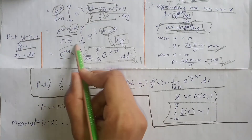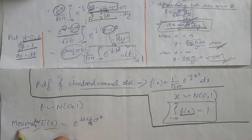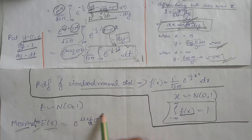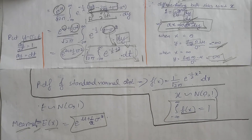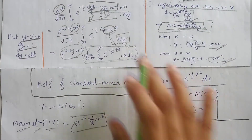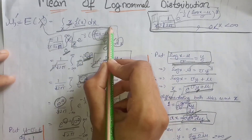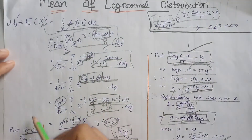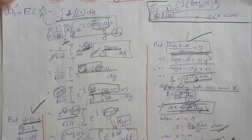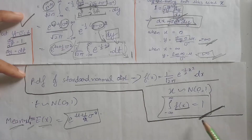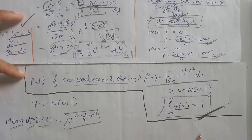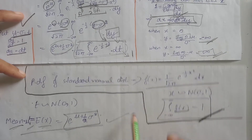Therefore, the mean, also called μ₁' or E[X], equals e^(μ + σ²/2). In summary, we wrote the definition of the expectation, applied two substitutions, performed algebraic calculations, and used the property that a PDF integrates to 1 to obtain the mean of the log-normal distribution.